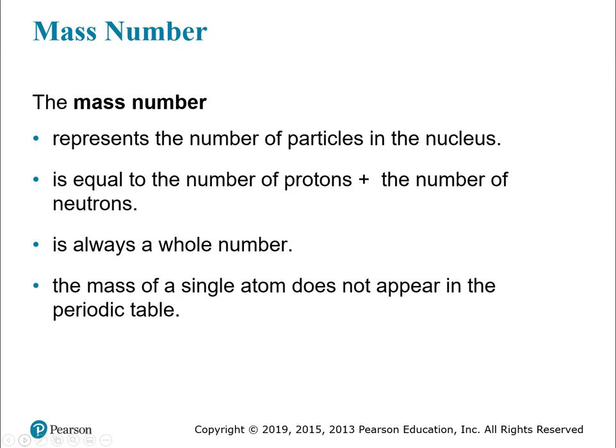Another important piece of information is the mass number. The mass number tells you how many particles you have in the nucleus, and it's equal to the number of protons plus the number of neutrons. It is also always a whole number — you won't see a mass number of 7.5. The mass of a single atom is not going to appear on the periodic table; what you're going to see is an average, and we'll talk about that shortly.